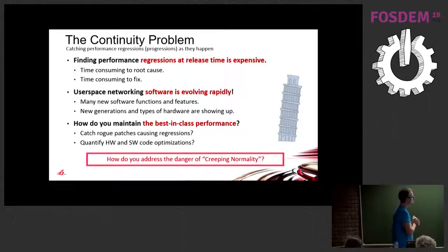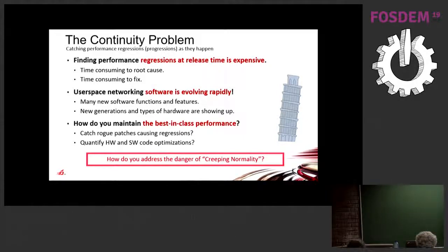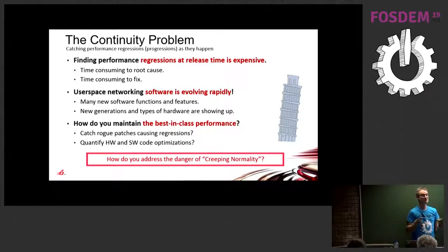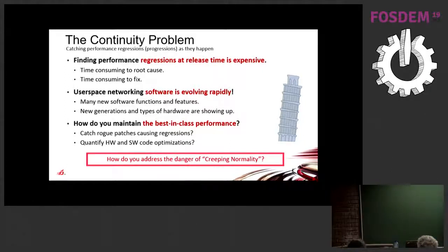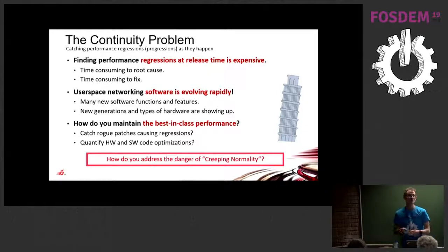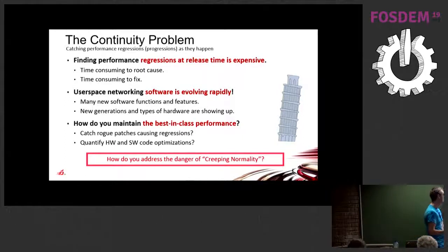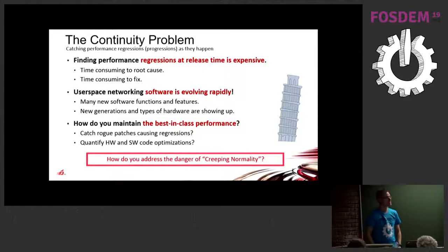This is the continuity problem: if you find performance regressions at release time, it's typically very expensive. With lots of software engineers in the room — if you measure a performance regression at release time, suddenly it's git bisect fun. The rate of velocity in communities like DPDK and FD.io VPP is huge, meaning a huge input of patches, which means you really need a strong safety net to catch performance regressions. How do you maintain best-in-class performance and avoid creeping normality — the boiled frog syndrome where things slowly degrade and you don't notice?